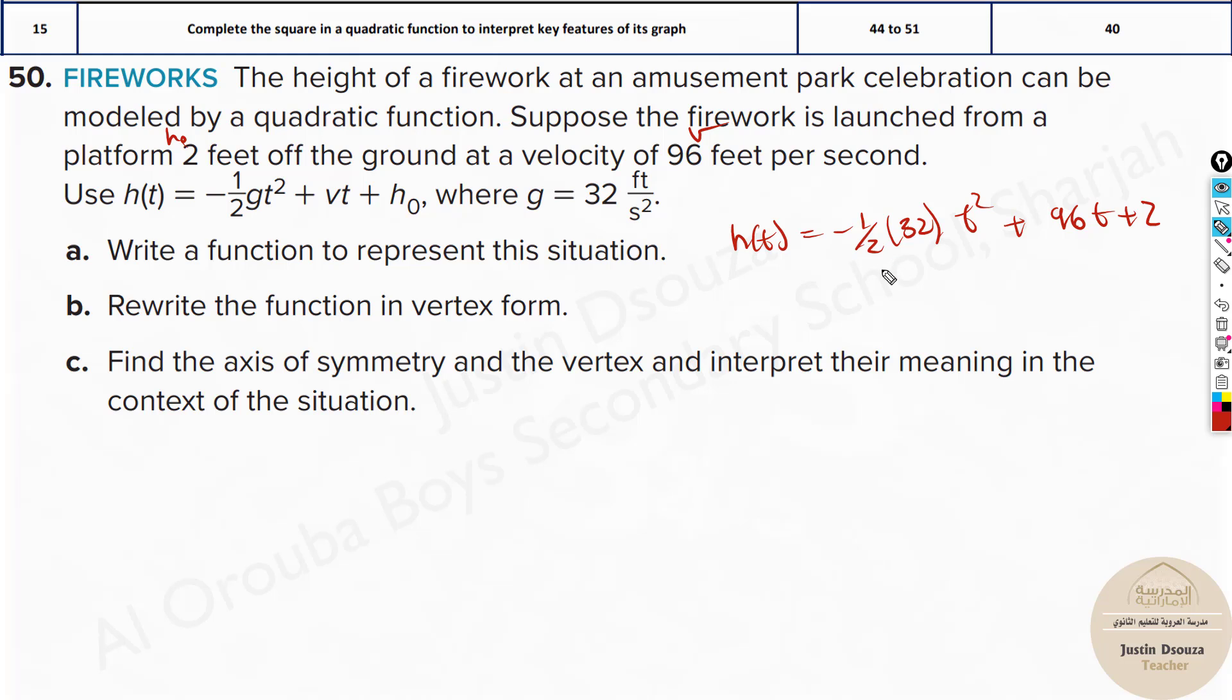Rewrite the function in vertex form. Now since you will have options, you can easily check which is the correct one by putting in the calculator, just like what we did for the previous questions, and find the axis of symmetry and the vertex and interpret the meaning.